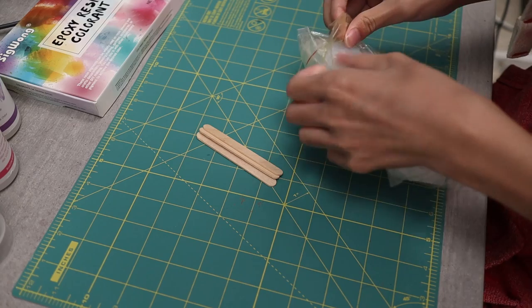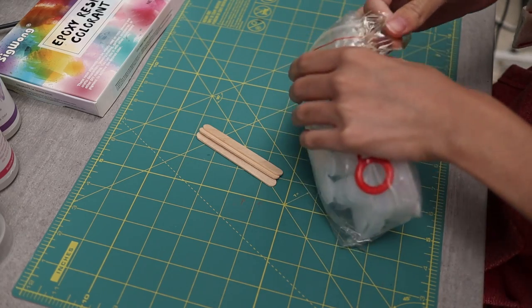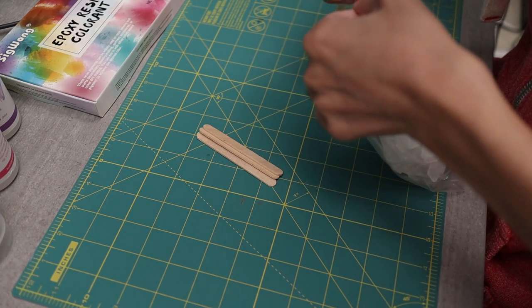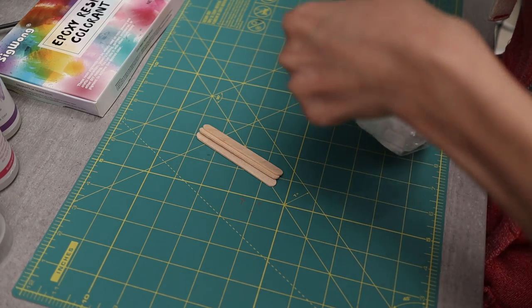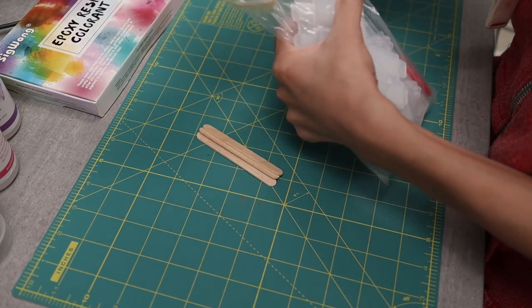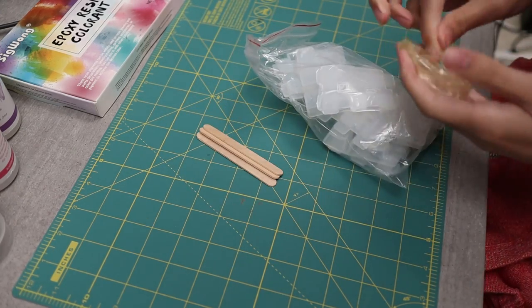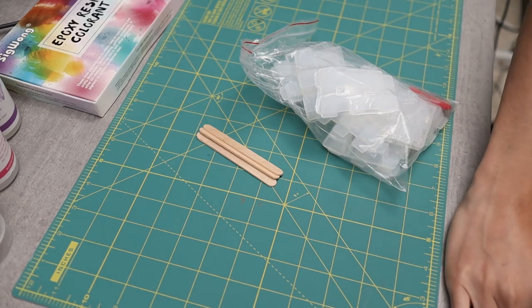Up next, we have our keycap molds. These are silicone molds that I also found on Amazon. They should work pretty well. And remember to be careful when using them, especially when you're taking your keycaps out, you don't want them to rip. They are reusable, so I'm going to try to be as gentle as possible with them.